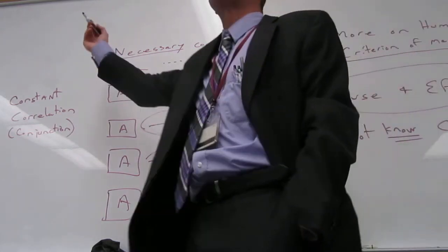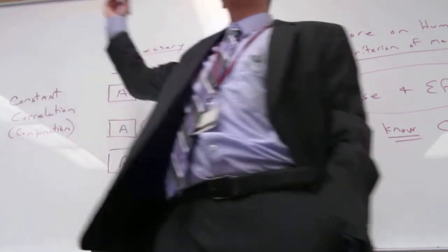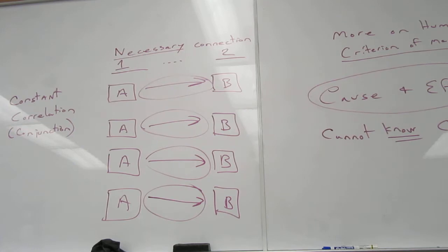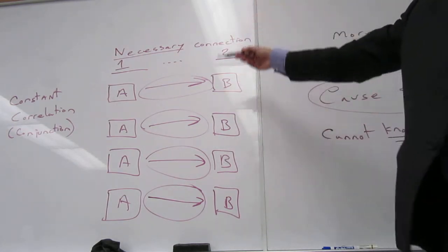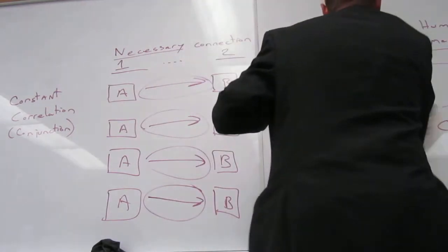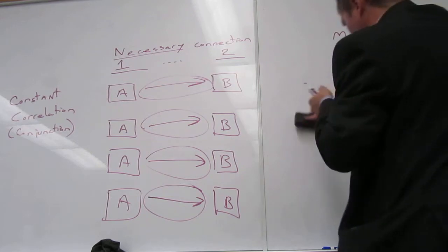Correlation merely means that when we've seen this happen, we've also seen this happen. According to Hume, it is our mind that fills in what we think is a necessary connection. And we do it because of our powers of reasoning.